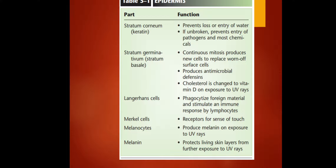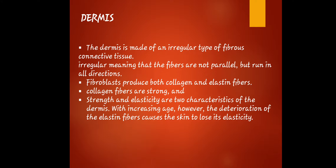Merkel cells function as receptors for the sense of touch — that is why the integumentary system can sense sensory information. Melanocytes produce melanin on exposure to UV rays, which is the natural pigment or color of your skin. Melanin protects living skin layers from further exposure to UV rays.